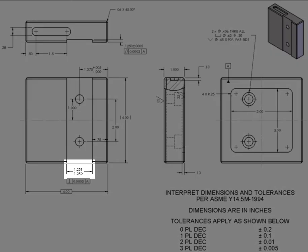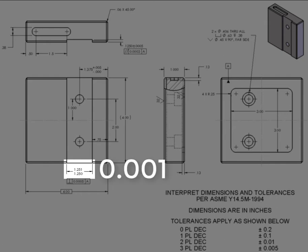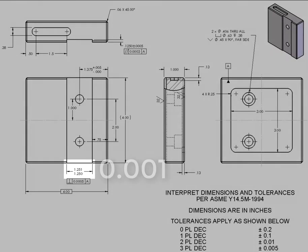The inch and a quarter slot dimension style is known as a limit dimension. The minimum feature size for the slot width is 1.250 and the maximum size is 1.251 inches. The 0.001 thou difference is the tolerance of the slot.